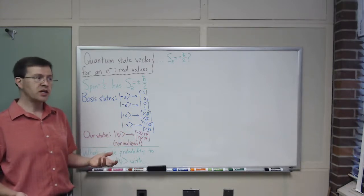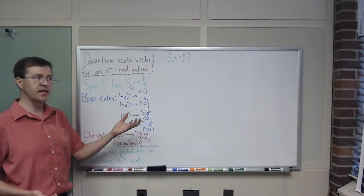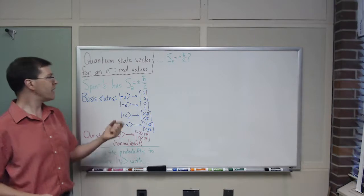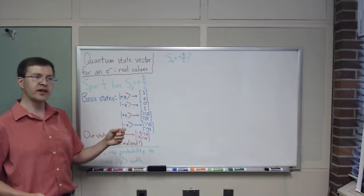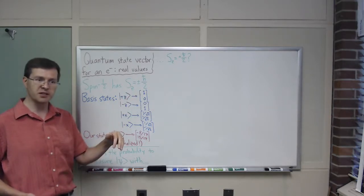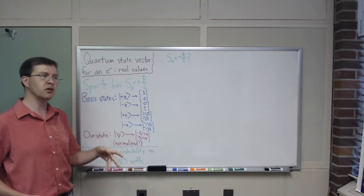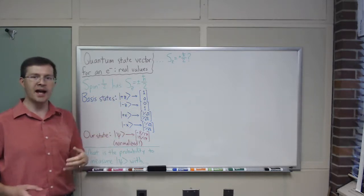As we know, if you measure an electron's angular momentum, its spin, along, say, the z-axis, then you find one of two values. You find that it's either plus h-bar over two or minus h-bar over two. There's no continuum of choices in the middle, it's one or the other.